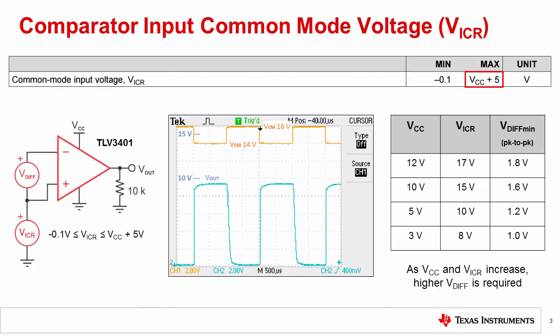Let's move on to discussing the input common mode voltage range of comparators. While for many comparators, the allowable common mode voltage is straightforward and extends from the negative supply to the positive supply, there are some interesting exceptions.